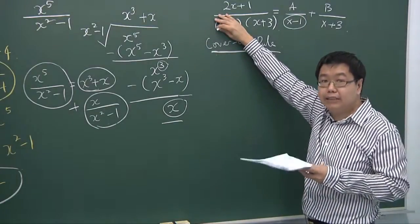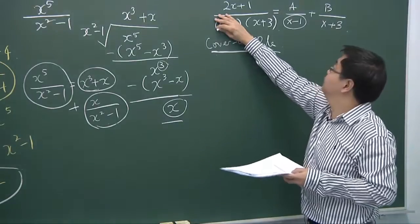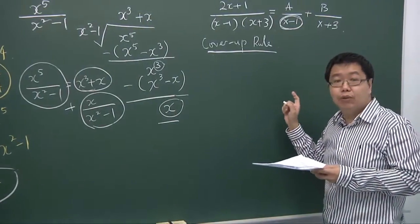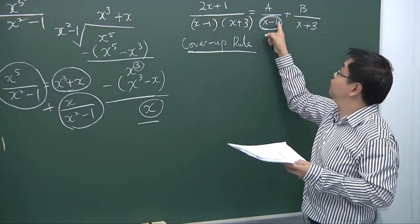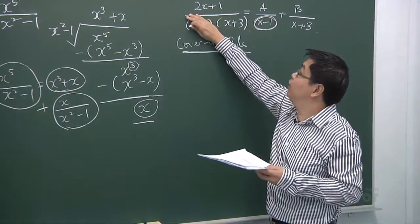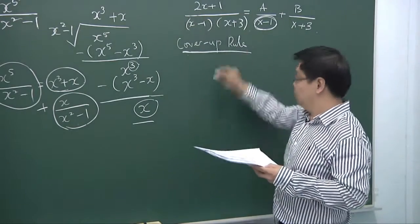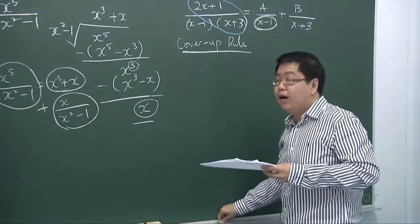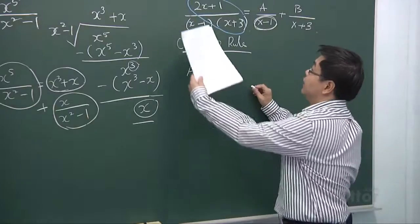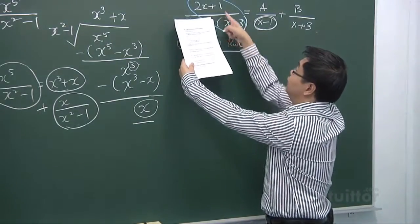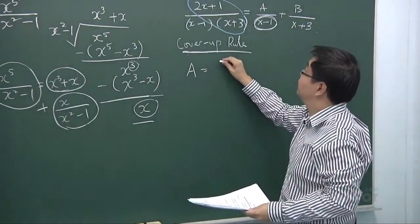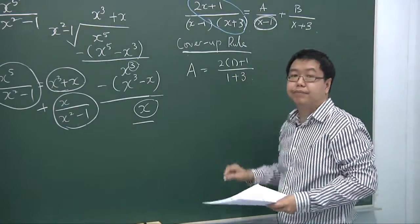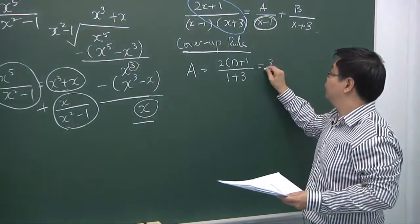Looking at the denominator, we ask what x value makes it equal to zero — of course, x equals 1. So we cover the (x minus 1) and substitute x equals 1 into the rest of the term. The value of A is 2 times 1 plus 1 over 1 plus 3, which gives us 3 over 4.